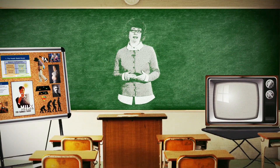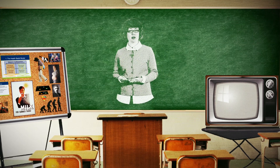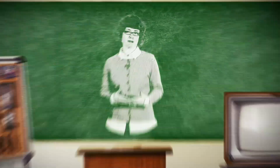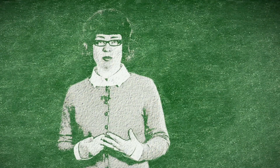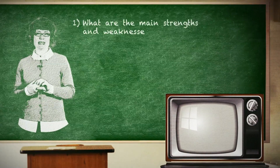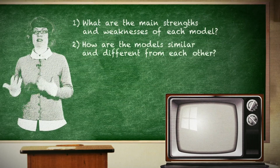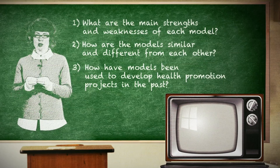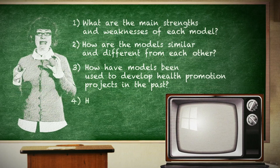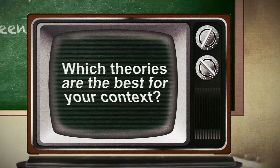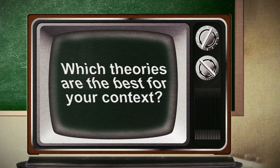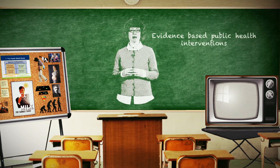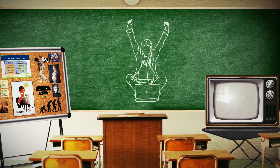These examples illustrate just two ways this model has been applied to explain and predict health-related behavior, and how health behavior theories can be key tools in understanding and changing people's actions. As you learn about health behavior theories used in public health, consider: What are the main strengths and limitations of each model? How are the models similar to and different from each other? How have they been used to develop health promotion interventions? You need to critically evaluate the various theories and consider how they've been used by others to explore which theories might be the best fit for your particular context. A good working knowledge of health behavior theories will be tremendously useful in designing evidence-based public health nutrition interventions.